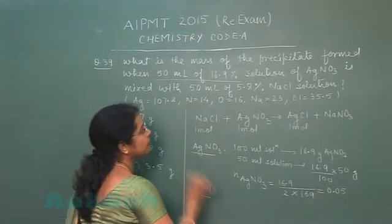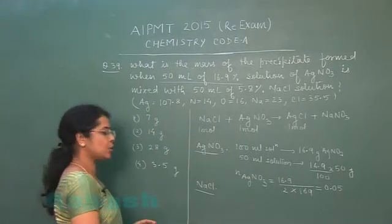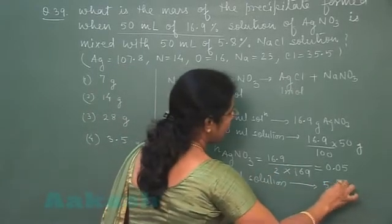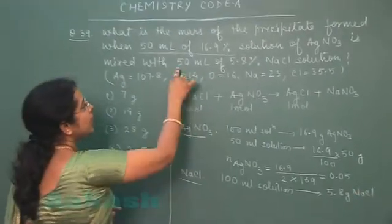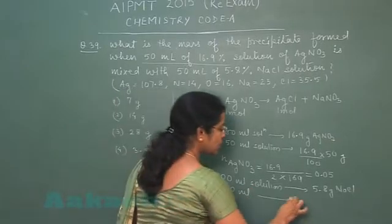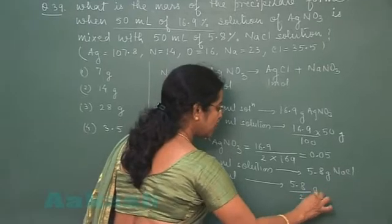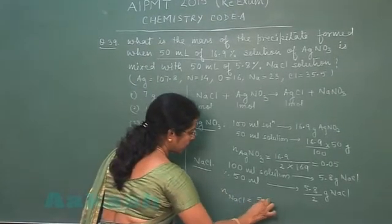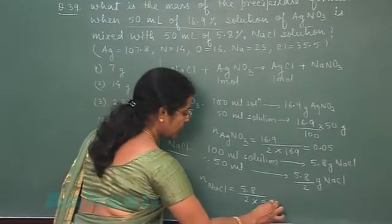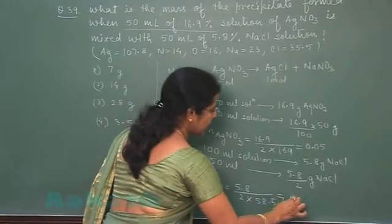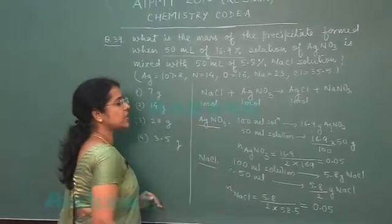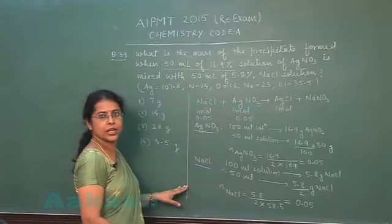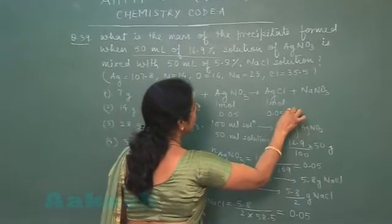Similarly, for the NaCl solution: 5.8% NaCl means 100 mL contains 5.8 g of NaCl. Taking only 50 mL gives 5.8/2 g of NaCl. Converting to moles: (5.8/2) divided by the molecular mass of NaCl, 58.5, also gives 0.05 mole. So 0.05 mole of AgNO3 reacts with 0.05 mole of NaCl.